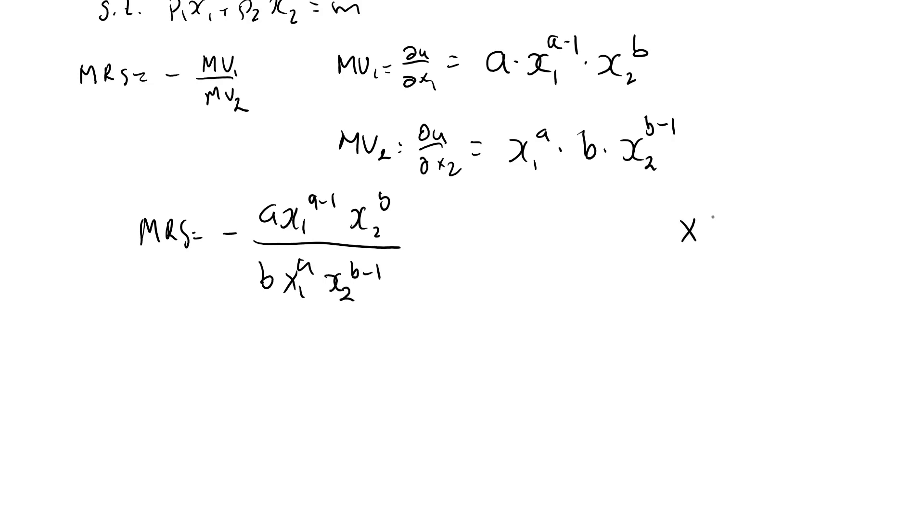Remember the power rule? If I have x to the a divided by x to the b, I do this one minus this one, a minus b. In my expression here, I have x1 to a minus 1 here, and I have x1 to the a here. So this becomes minus a over b, x1 to the, well, a minus 1 minus a, or minus 1. Similarly for x2, I do b minus b minus 1, and that is 1. I don't need to write that. So I can write MRS like this, or if you like, we can write it as minus ax2 over bx1.